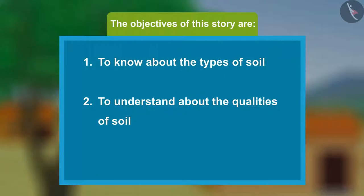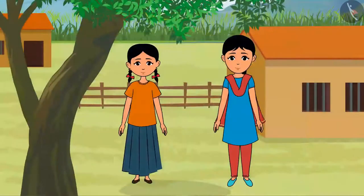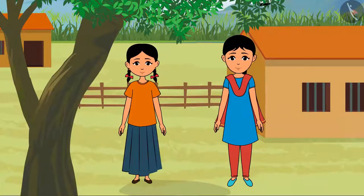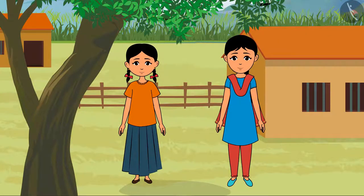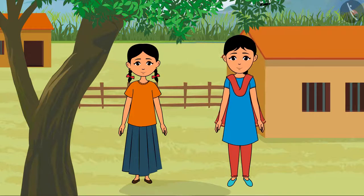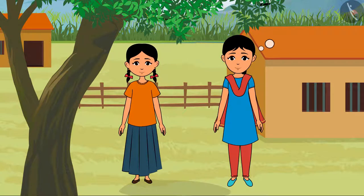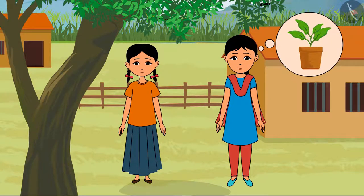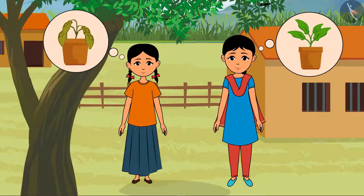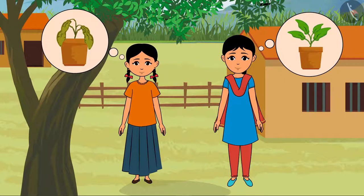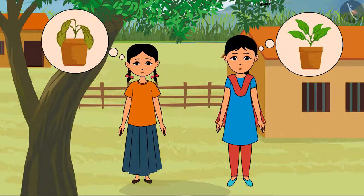The objectives of this story are to know about the types of soil and to understand the qualities of soil. This is Neeloo and that is Minu. Both of them had planted a plant in two different pots. Neeloo's plant had become lush and green, however Minu's plant did not grow much and had no fresh green leaves.